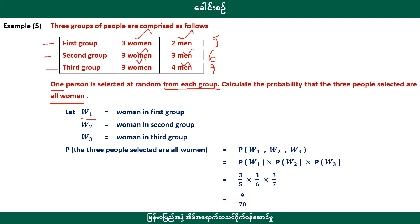W1 is a woman in the first group. W2 is a woman in the second group. W3 is a woman in the third group.